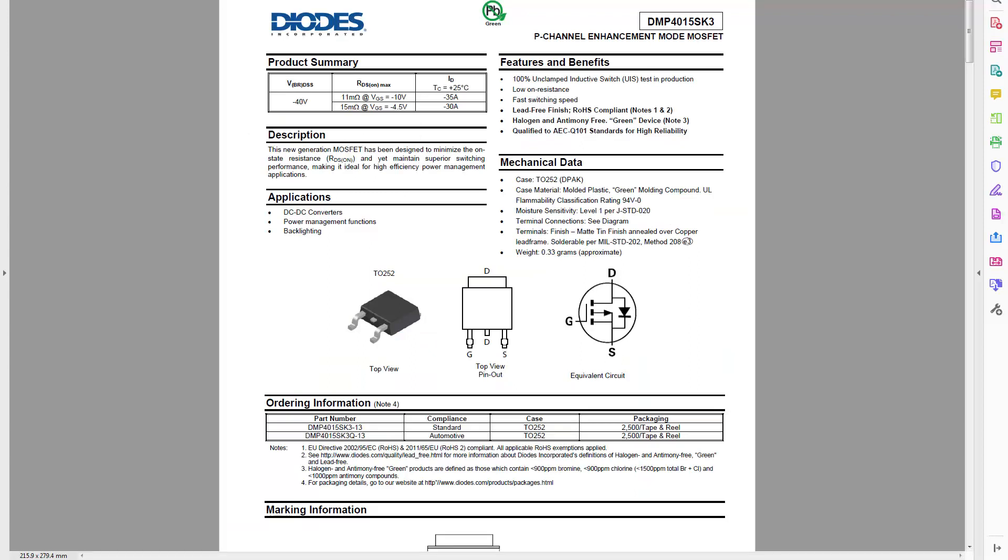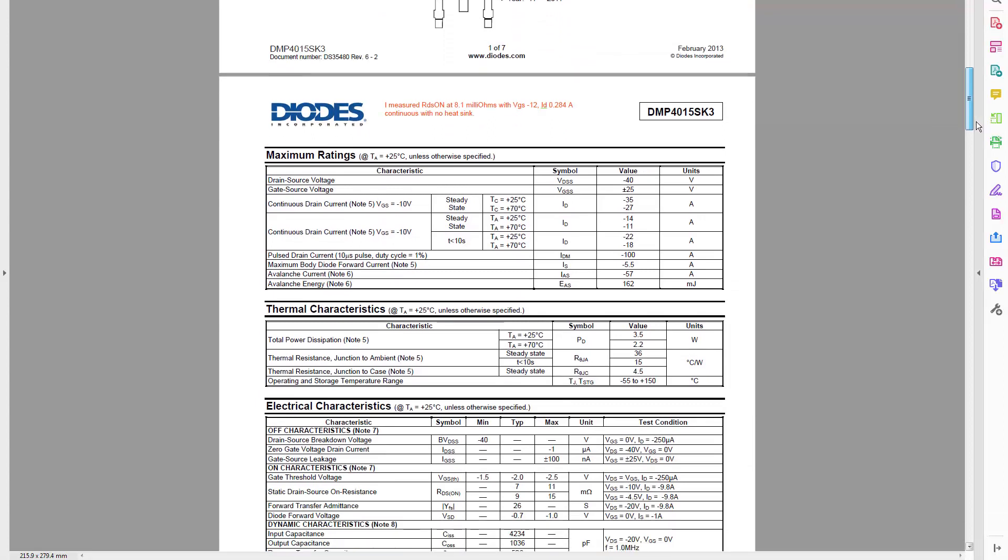I decided to use the DMP4015SK3 p-channel MOSFET as a high side switch in the battery. It's capable of switching up to 40 volts, which is a lot higher than any likely battery voltage that we would be using. It's a very small device, it's only 6.5mm across, but it's still capable of switching 35 amps. So that is nice. The other good thing about it is that when it is on, its maximum resistance is 15mΩ. And in fact, I measured it at a plausible current to be only 8.1mΩ on the particular one I've got here. So that means that you're not dissipating any power in the switch when it's on.